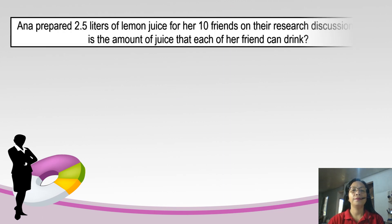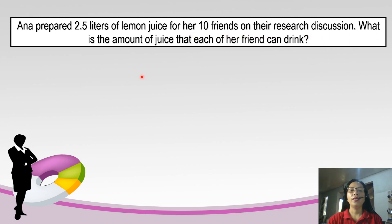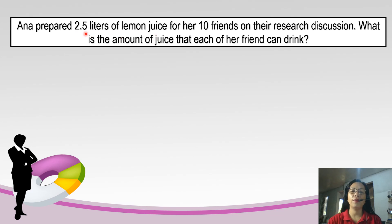Let's proceed now. We have here the problem. Can you read with me? Anna prepared 2.5 liters of lemon juice for her 10 friends on their research discussion. What is the amount of juice that each of her friends can drink? Let's identify what are the given data in this problem. We have 2.5 liters of lemon juice and 10 friends of Anna. So, we are going to divide the 2.5 liters of lemon juice into 10 because Anna has 10 friends to drink the juice.